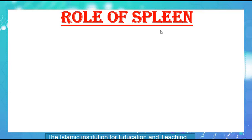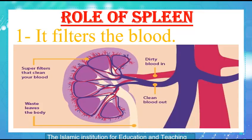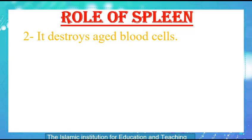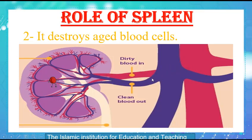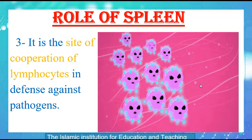The first role of the spleen is to filter the blood, so that dirty blood enters the spleen while it leaves clean. Microbes in the blood are destroyed when they enter the spleen. The second role of the spleen is to destroy aged blood cells. Normal blood cells can pass through normally, while aged blood cells will be destroyed.